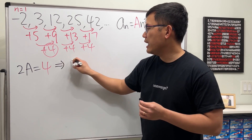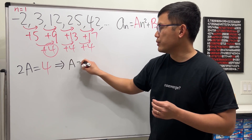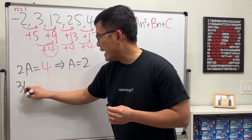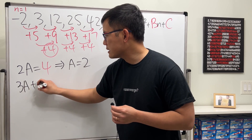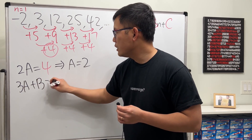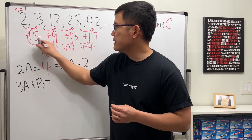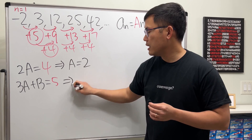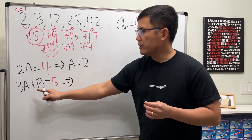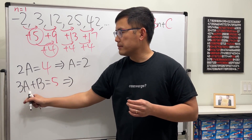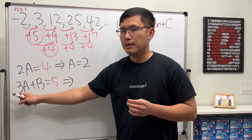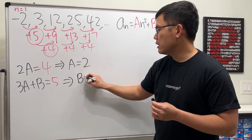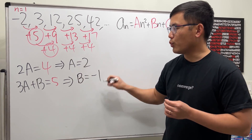That means a equals two. Then 3a plus b equals the first difference, which is five. Three times two is six, so we subtract six from both sides and b equals negative one.